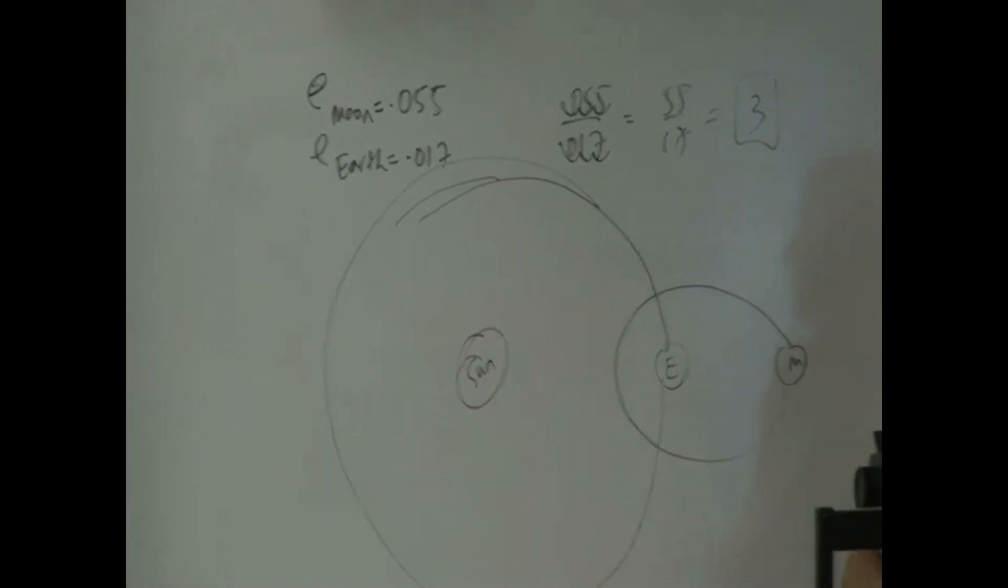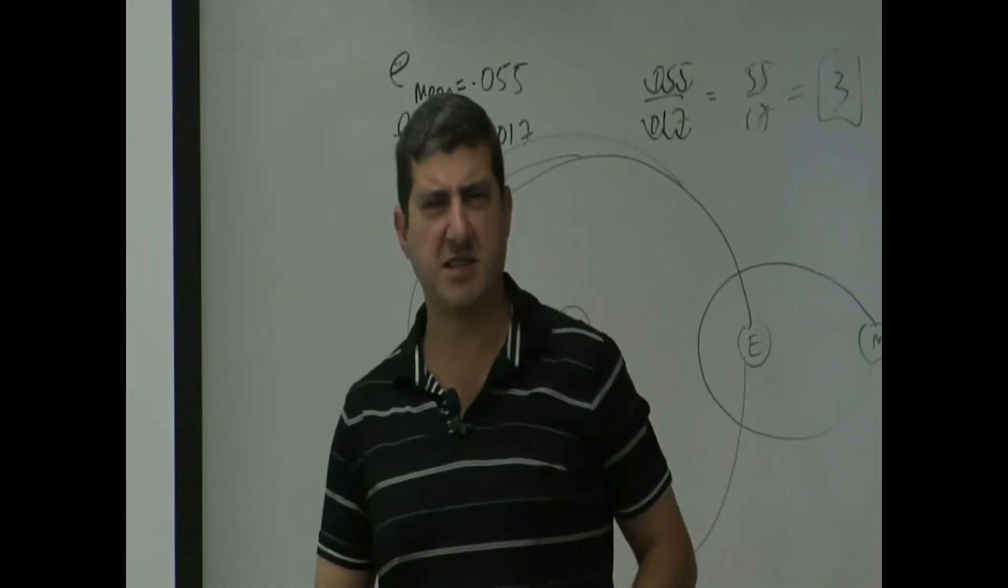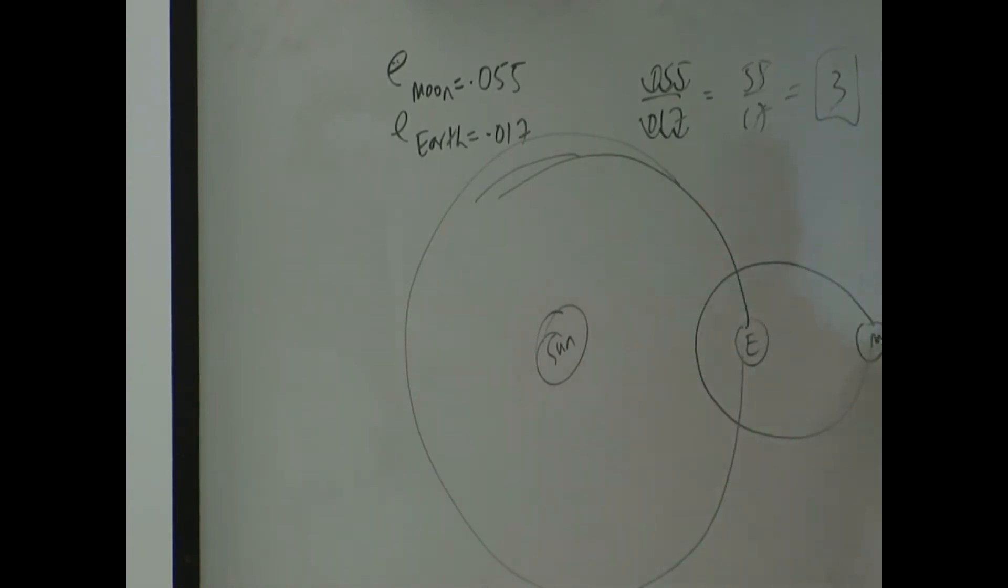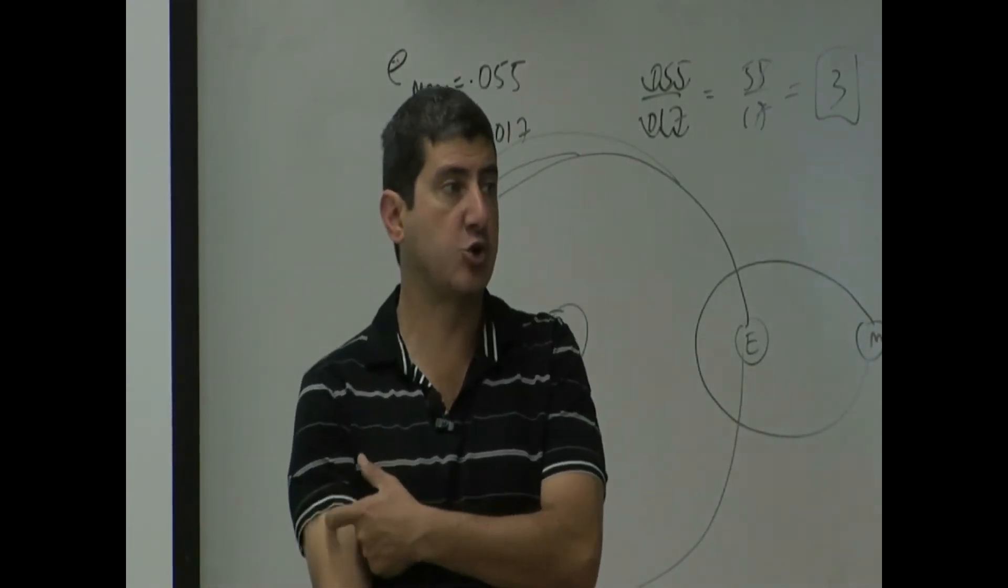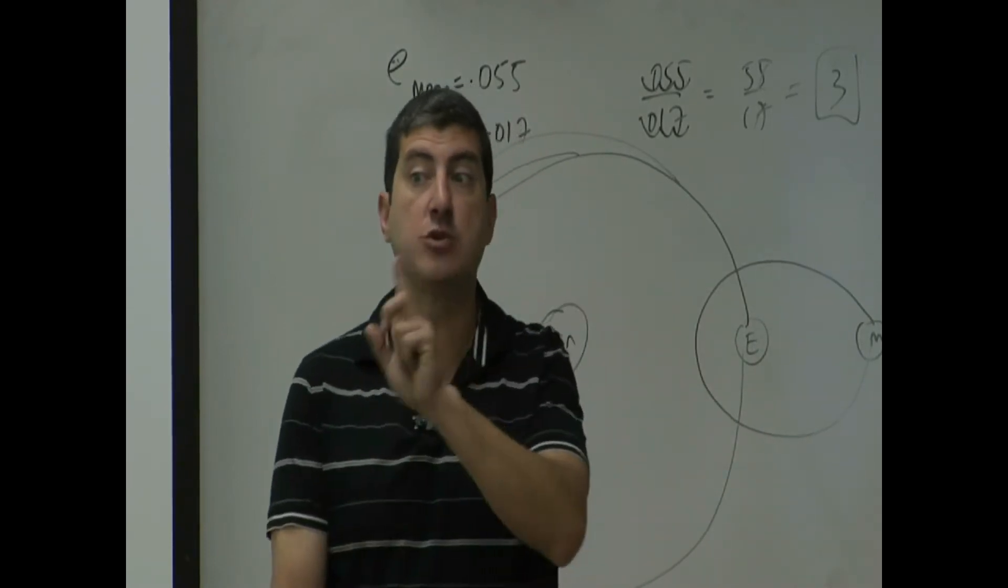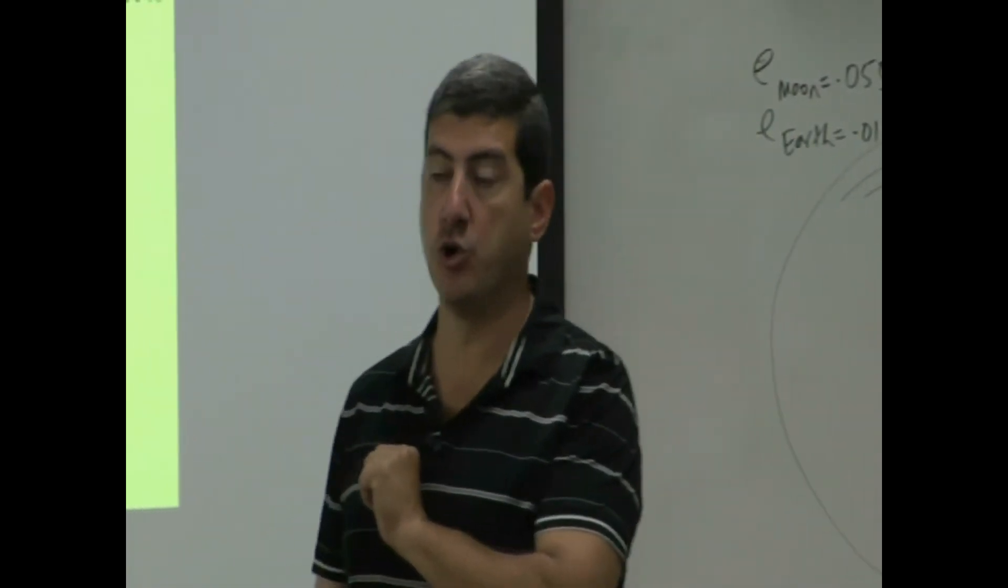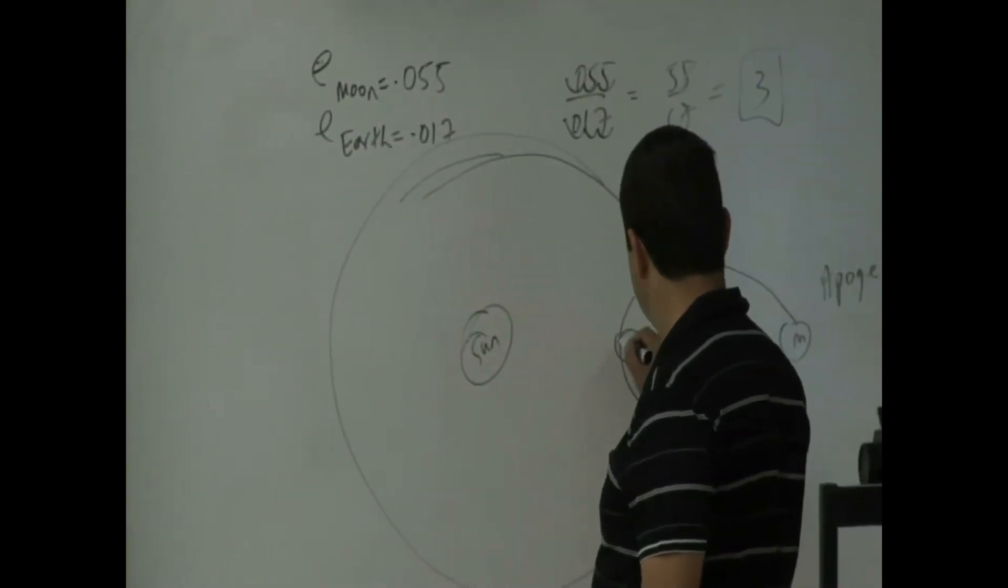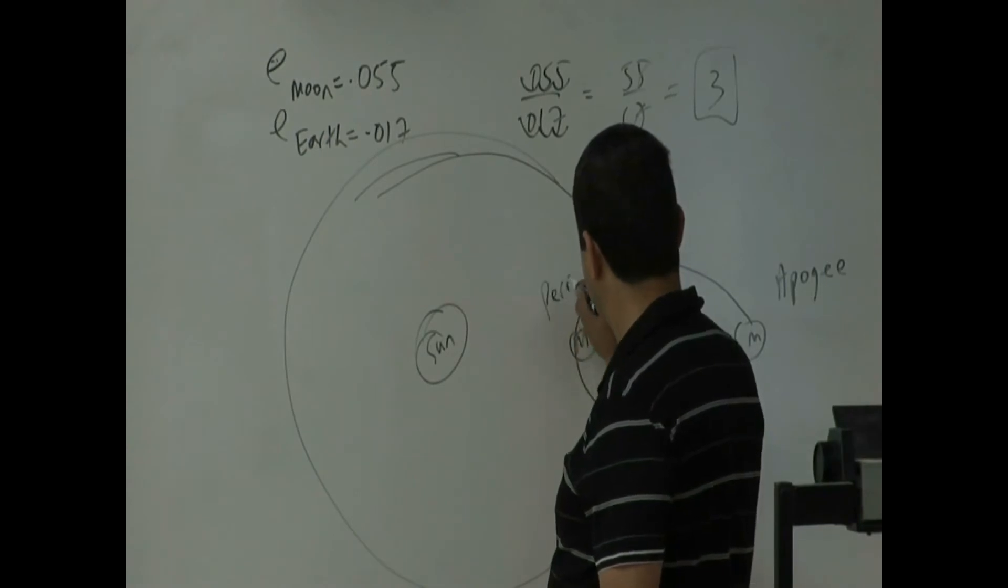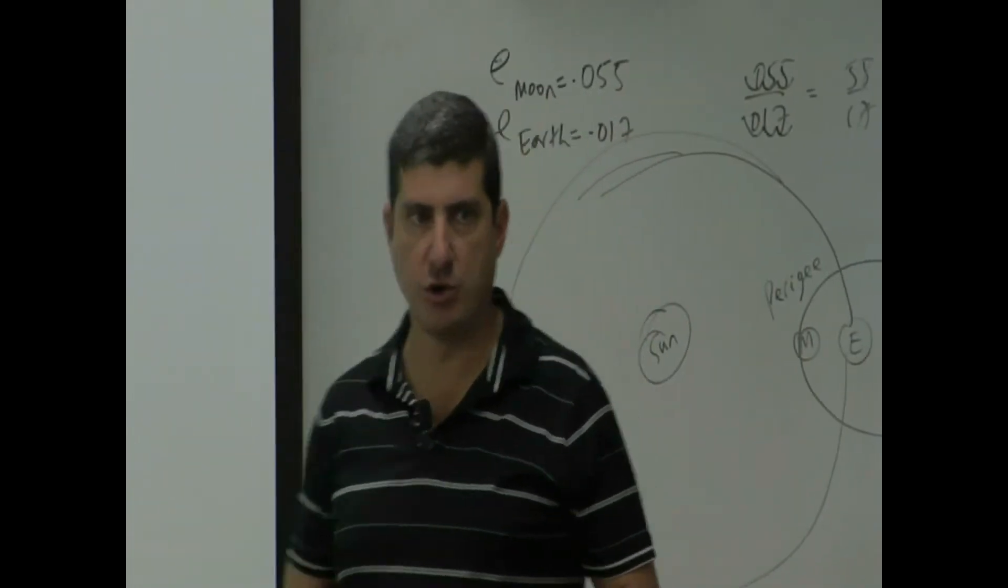When the moon is far from the Earth, what do we call that? What position? That was many lectures ago. When the moon is far from the Earth, it is in its apogee. As a matter of fact, that's true for any satellite that's going around the Earth, even a natural satellite. When the satellite is far from us, we call it its apogee. When the satellite is close to us, we call it perigee.